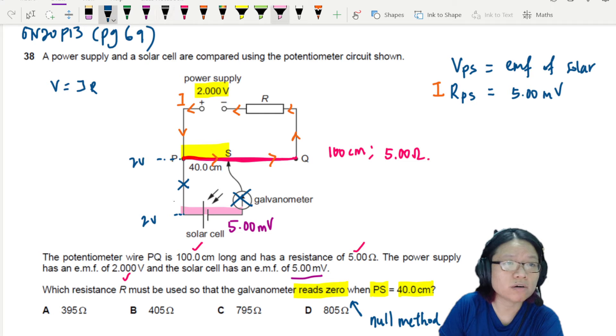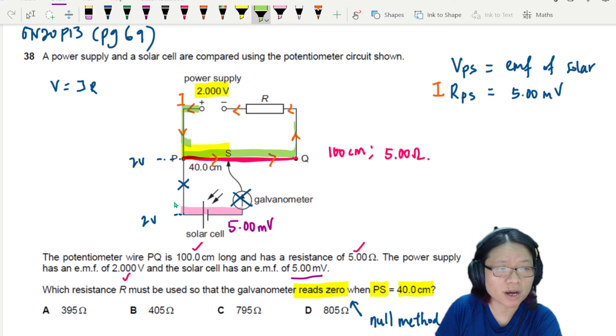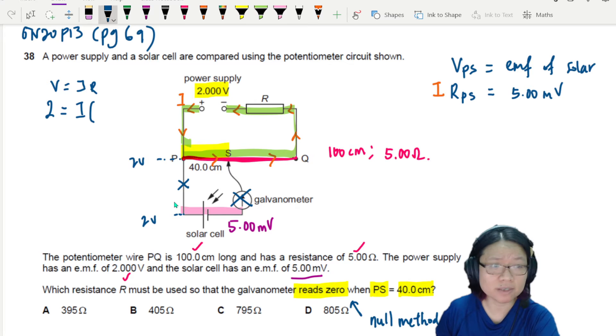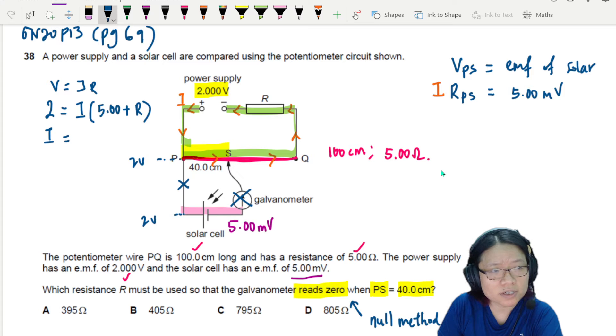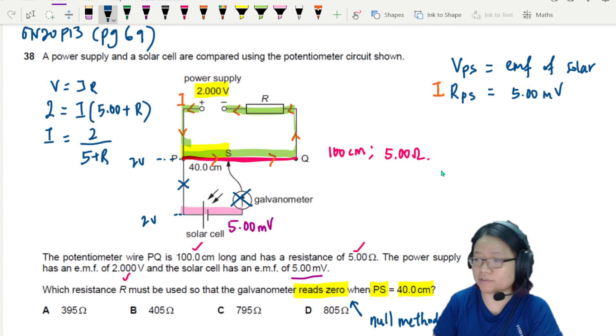We're going to use V equals IR for the upper circuit, for the upper loop where the current is flowing. So the loop where the current is flowing is this green color loop. I'm going to use V equals IR for this loop. What is the provider of energy? The 2 volt power supply. I'm looking for current. What's the total resistance? We are talking about the entire wire because the current flows through the entire wire. That will be 5Ω plus the resistance R. So I is equal to 2 over 5 plus R. I'll add the decimal points in later if needed.